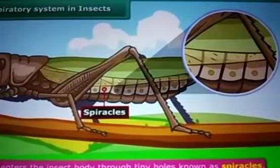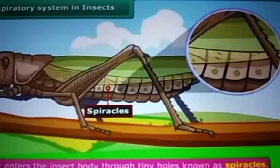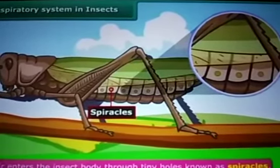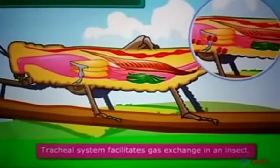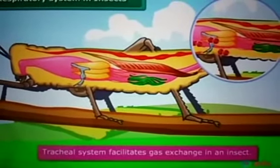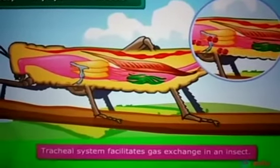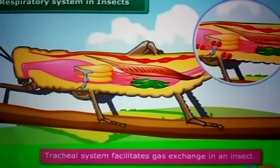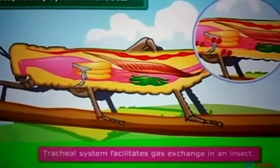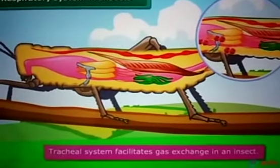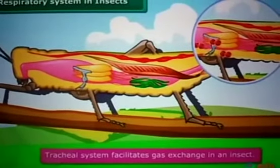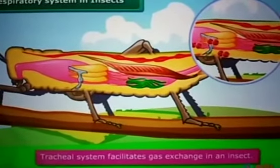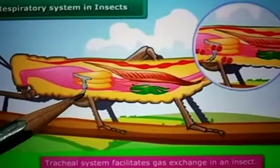Insects have a network of air tubes called trachea. Insects use the trachea for exchange of gases. You can see the tracheal system that facilitates gas exchange in an insect. Oxygen-rich air rushes through spiracles into the tracheal tubes.